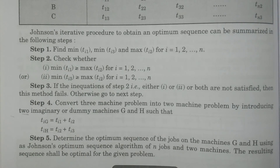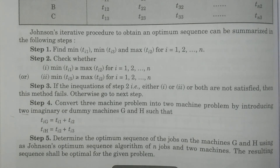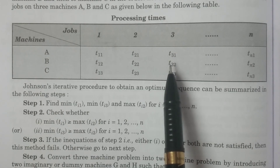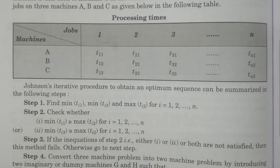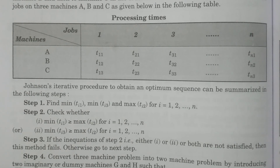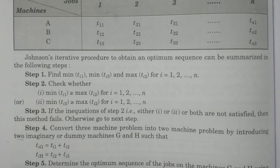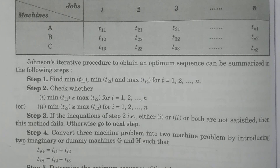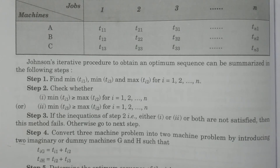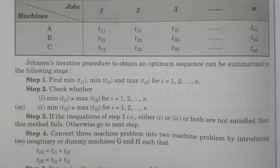Using the optimum sequence obtained, we now calculate the time periods for the original machines A, B, and C as specified in the original problem. Taking the optimum sequence and applying it to all machines A, B, C in order, we calculate the starting time and finishing time (time in and time out) for each job. Then we calculate the total elapsed time and idle time for machines A, B, and C using the usual Johnson's algorithm procedure for two machines, extended to the three-machine problem.